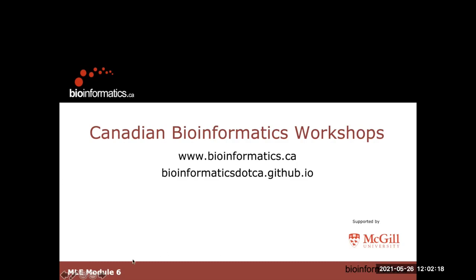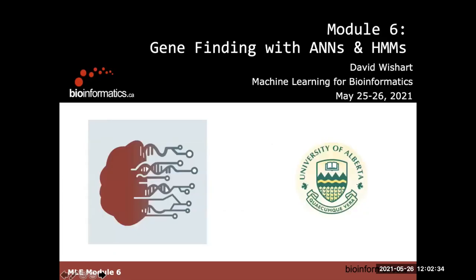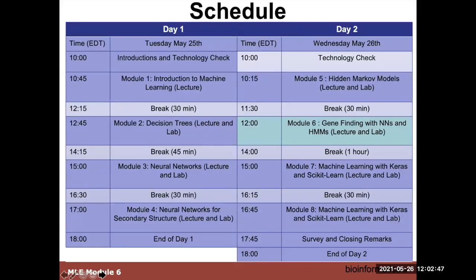This is module six of the machine learning course. As before, we have our Creative Commons license — slides can be shared with others and distributed freely. The title for this module is 'Finding Genes with Artificial Neural Networks and Hidden Markov Models.' It's a fairly long module, set for almost two hours, including both the lecture and the lab. It also tries to cover some of the problems or mistakes that can happen when people try and apply one concept too far.